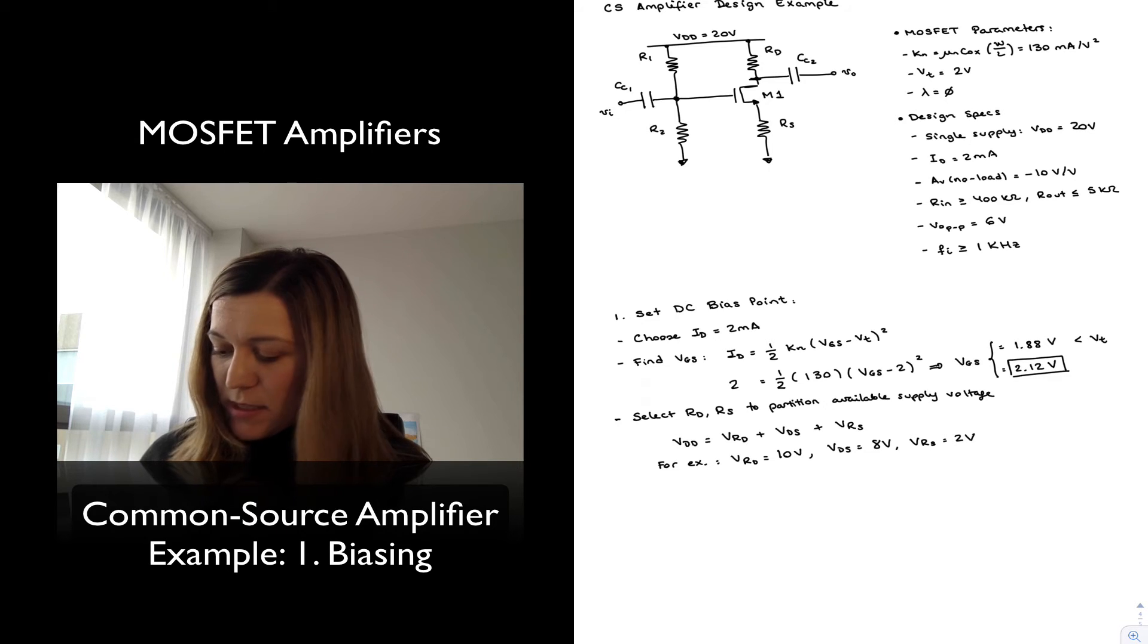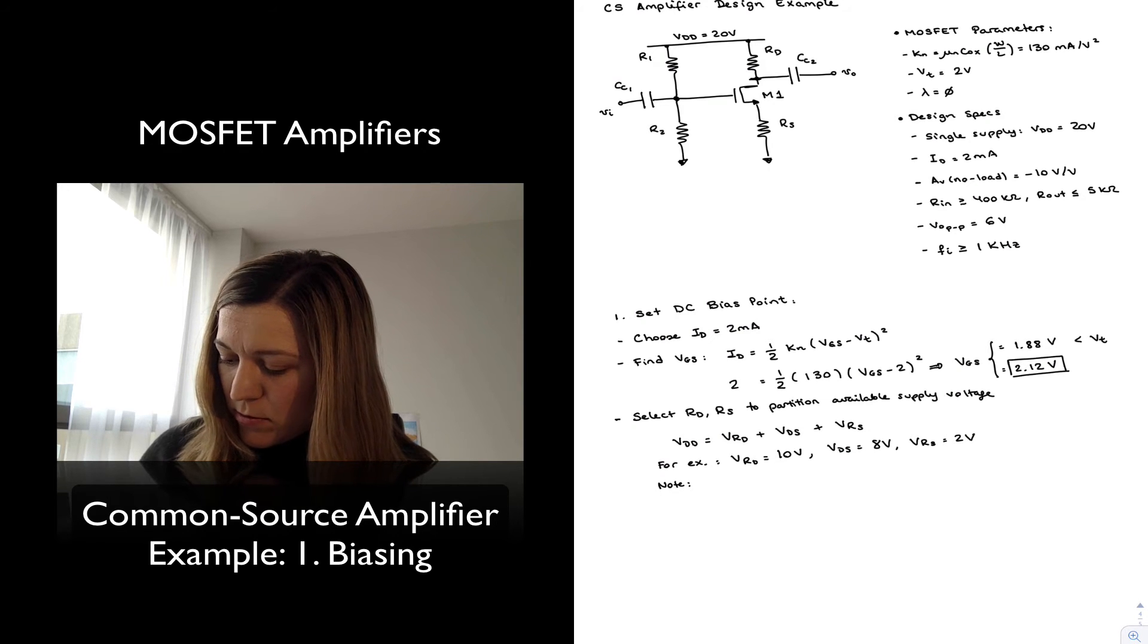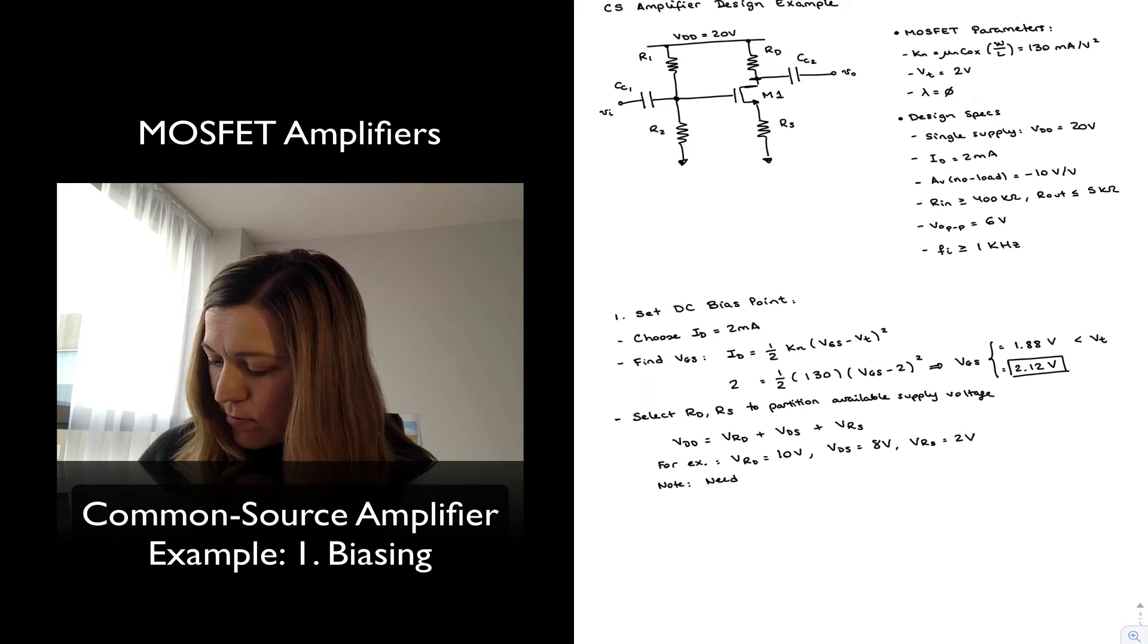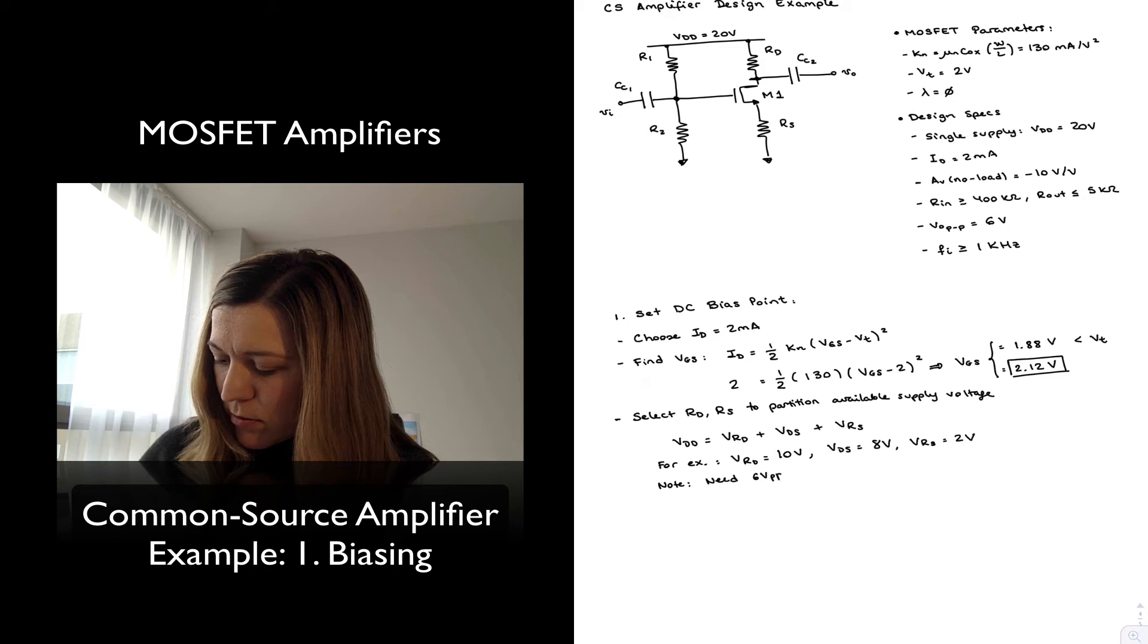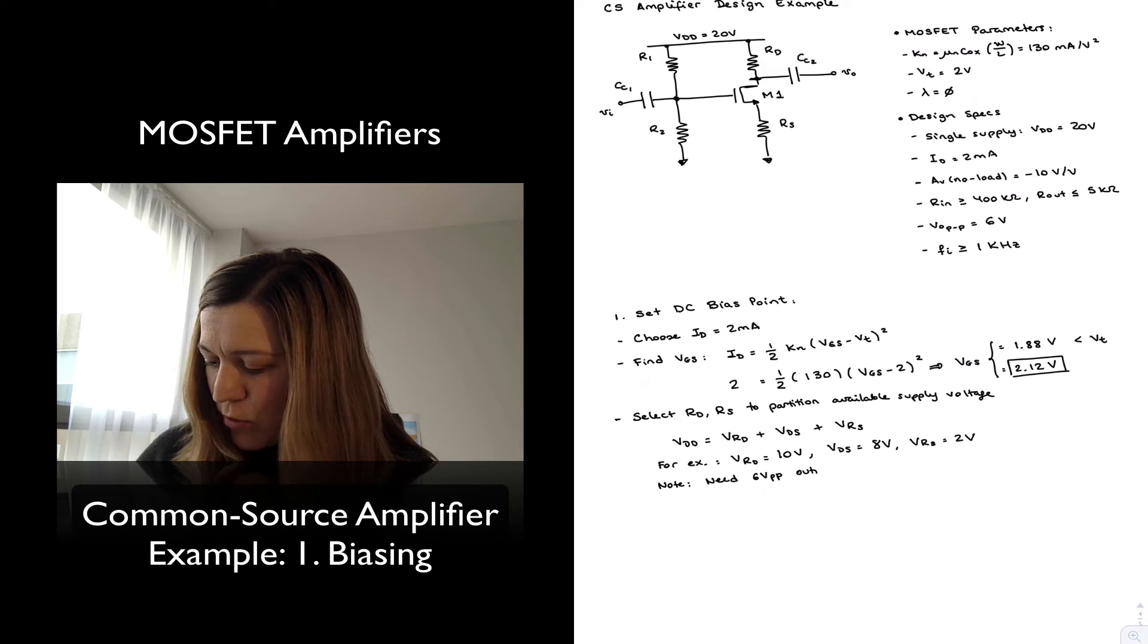So that means the requirement of VDD is equal to the sum of those three. I'm going to make a note here: I need 6 volts peak-to-peak output voltage swing.